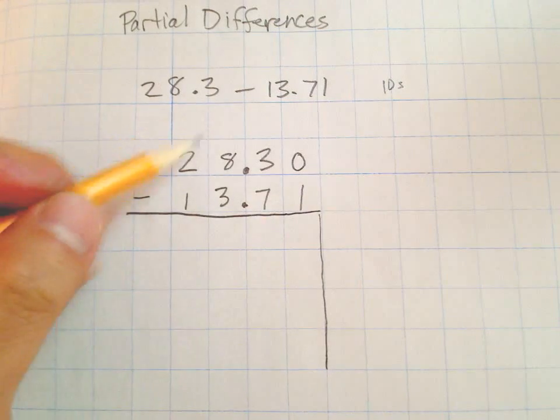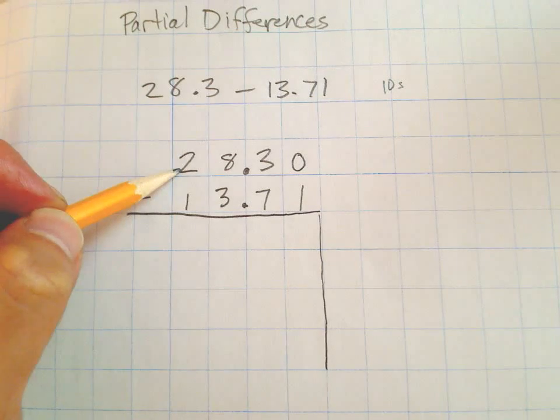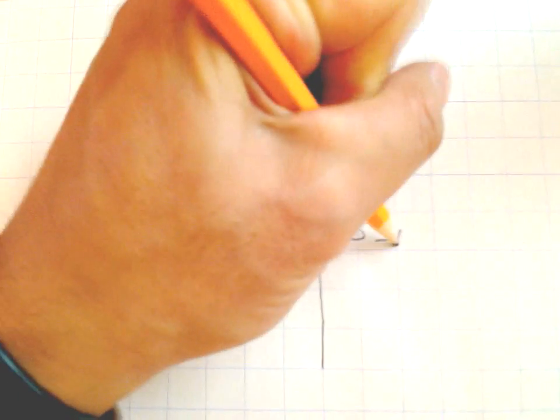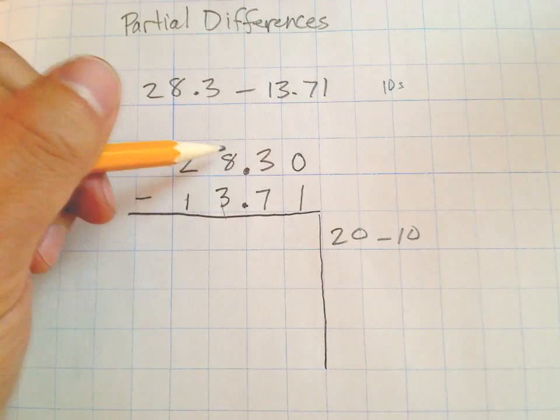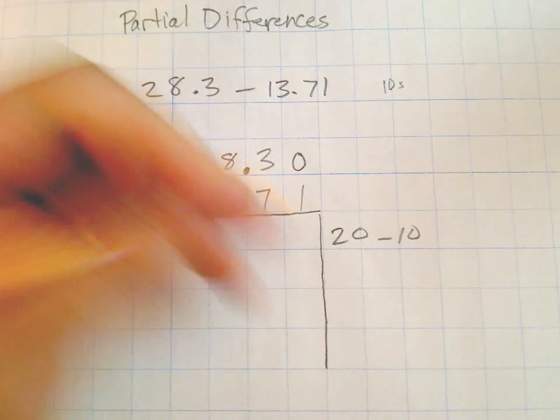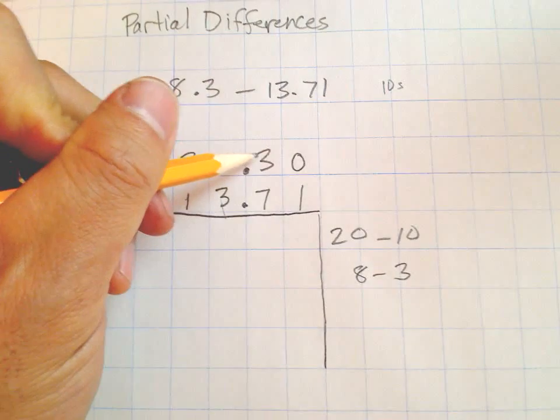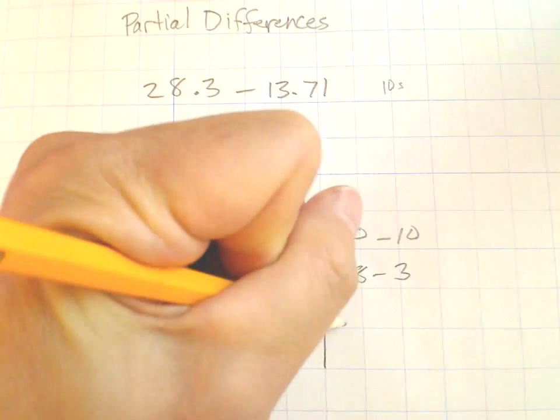Really, this problem ends up being four different problems. We start with all our place values from left to right, from largest to smallest. We'll start with the tens: this 2 really is 2 tens, that's 20 minus 10, one ten there.